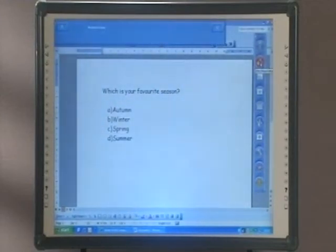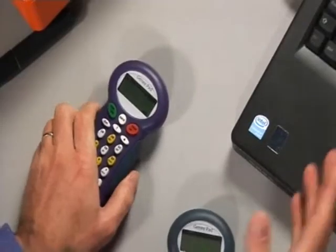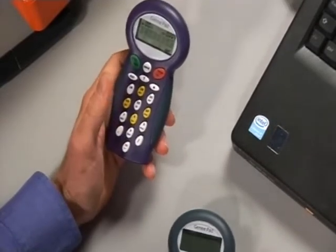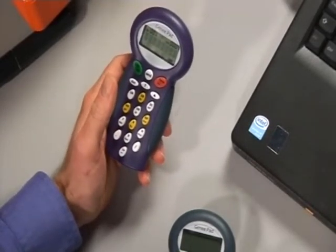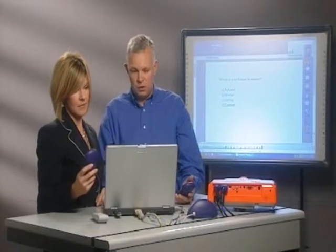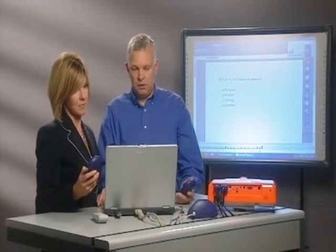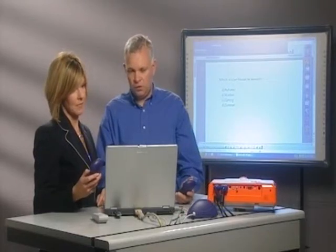Once again, we get the toolbar at the top. With our handset when it's switched on, which is your favorite season? Is it autumn, winter, spring, or summer? Choose A, B, C, or D. You make your selection and you can see the responses are appearing at the top of the screen.